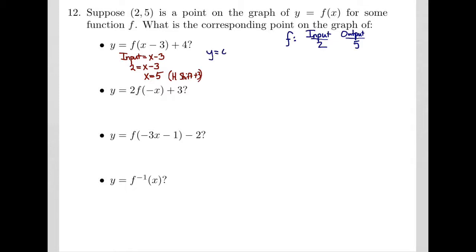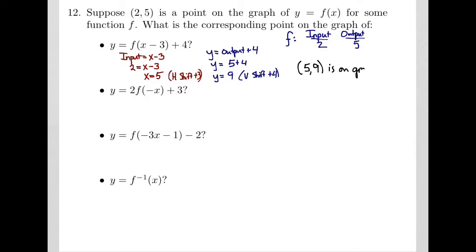On the other hand, y is the output of my function plus 4. The output of my function was 5, so my y value is 9. What happened is there was a vertical shift of plus 4 — a shift up. So the corresponding point is (5, 9), which is on the graph y equals f of x minus 3 plus 4.